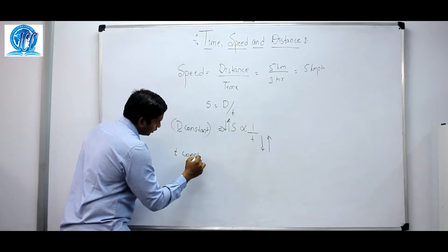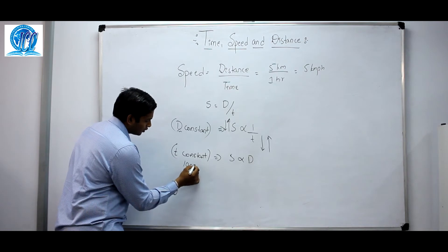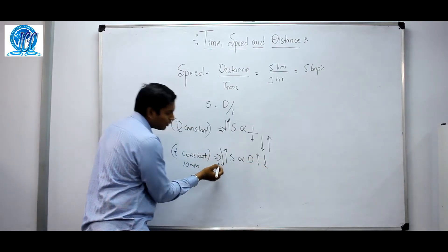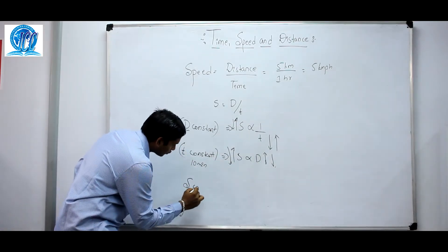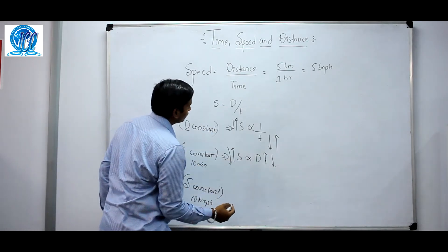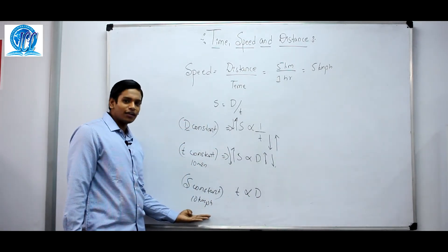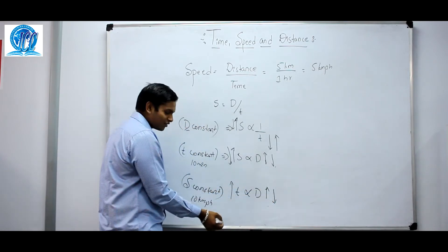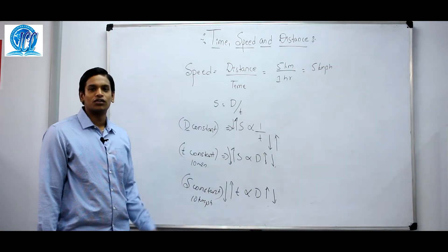If T is constant, speed is directly proportional to distance. For example, if time is fixed at 10 minutes, to cover a higher distance you need to travel at a higher speed, and for less distance you travel at a lesser speed. Similarly, if speed is constant — say 10 km/h — then time is directly proportional to distance. To cover a higher distance at constant speed, you need to travel for a longer time, and for less distance, less time. This is the basic understanding of time, speed, and distance when solving problems.